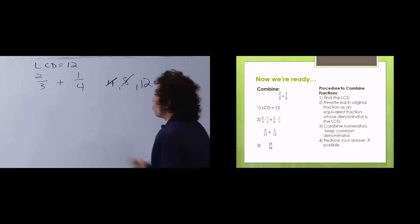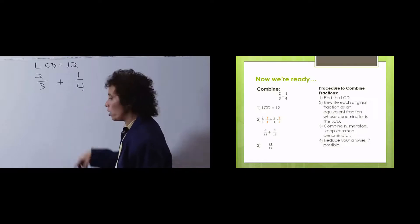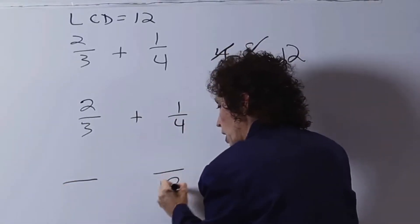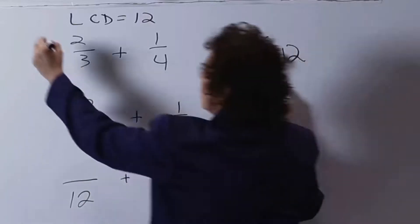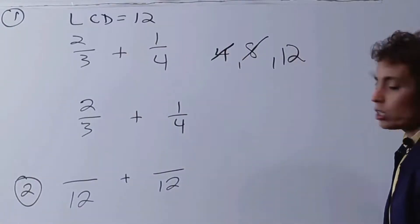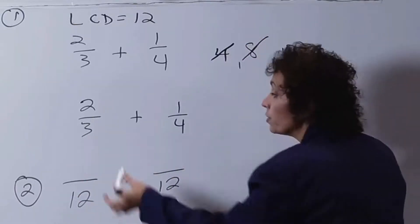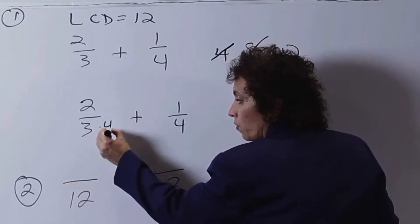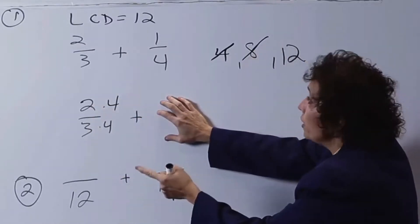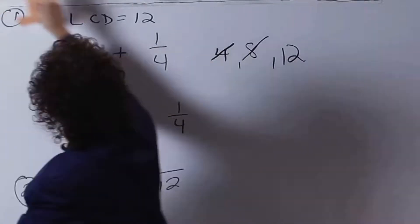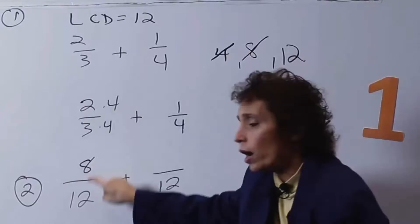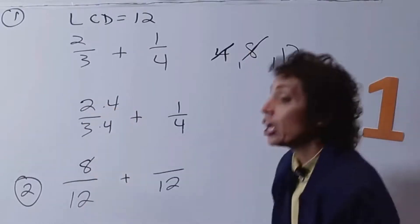We're going to do these horizontally. We want both of these fractions to have the common denominator of 12. I'm going to rewrite these so you can see where I started. I want both fractions to have a common denominator of 12. The first thing I do is get a common denominator. The second thing I do is build my fractions to have that denominator. To build your fraction, I say to myself: what do I have to multiply 3 by to get to 12? Well, that is 4. Whatever I do to the bottom, I've got to do to the top, because I have to multiply the whole fraction by 1.